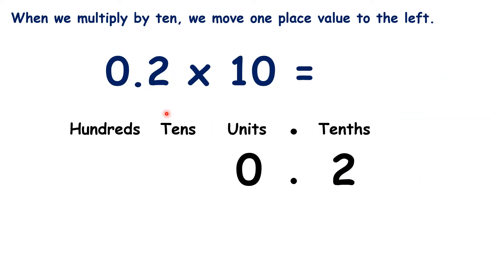So let's think about 0.2 times 10. We can't just write a 0 at the end, because 0.20 is the same as 0.2. Instead, let's move the digits one place value to the left, so now we have 0 tens and 2 units, but we can ignore our 0 tens, so our answer is 2.